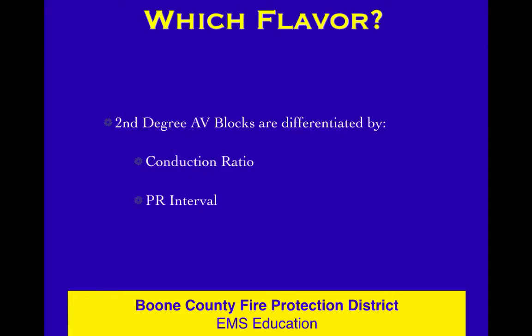Second degree AV blocks are really differentiated by two things: the conduction ratio - the number of P's per QRS - and the PR interval. This is assuming the P's are coming on time and are not early and ugly. If they're coming on time, it's a second degree AV block of some type. Look at the conduction ratio and the PR interval - that's the foundation to help you get through AV block determination.